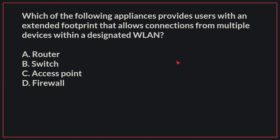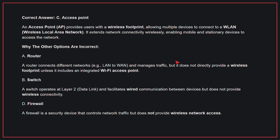Which of the following appliances provides users with an extended footprint that allows connections from multiple devices within a designated WLAN? The correct answer is C, Access point. An access point provides users with a wireless footprint, allowing multiple devices to connect to a WLAN. It extends network connectivity wirelessly, enabling mobile and stationary devices to access the network.